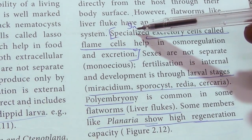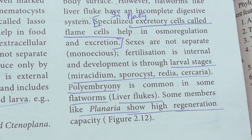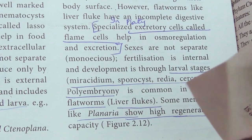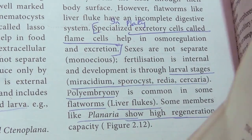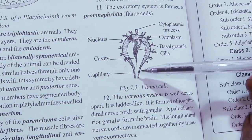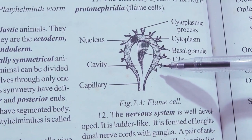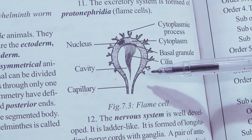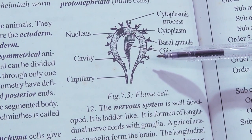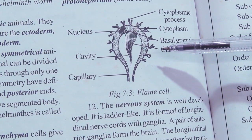Flatworms like liver fluke have an incomplete digestive system — only one opening that serves as both mouth and excretory opening. Planaria has this incomplete digestion. It has specialized excretory cells called flame cells, which are helpful for excretion and osmoregulation. In lower animals we see different specialized cells: cnidarians have nematocysts, Ctenophora has lasso cells, and here in Platyhelminthes we have flame cells.